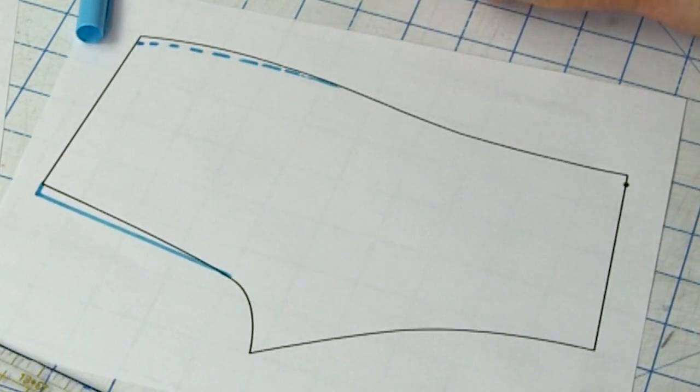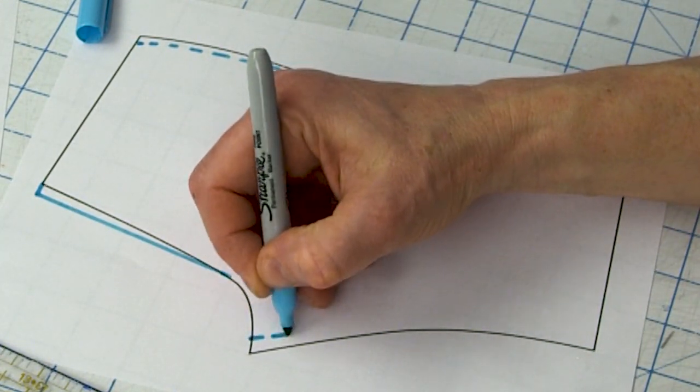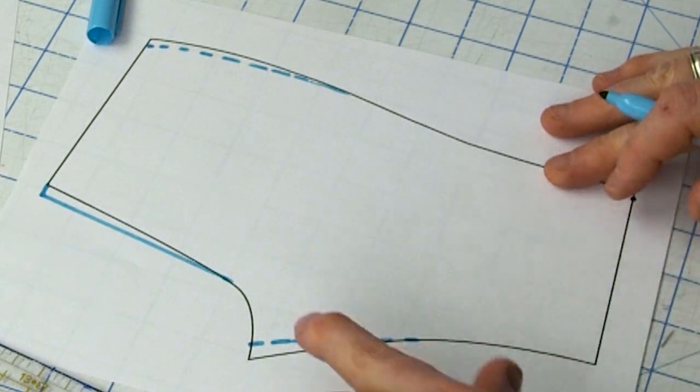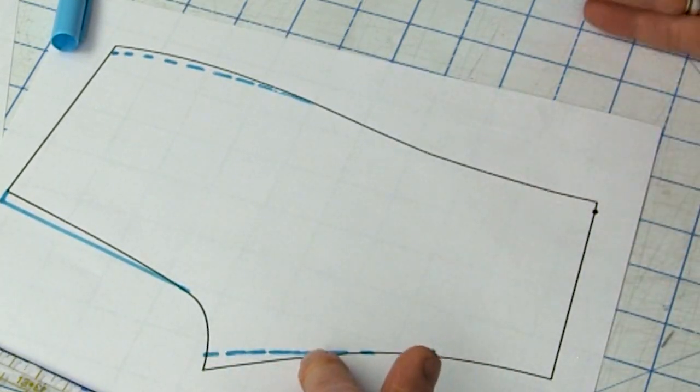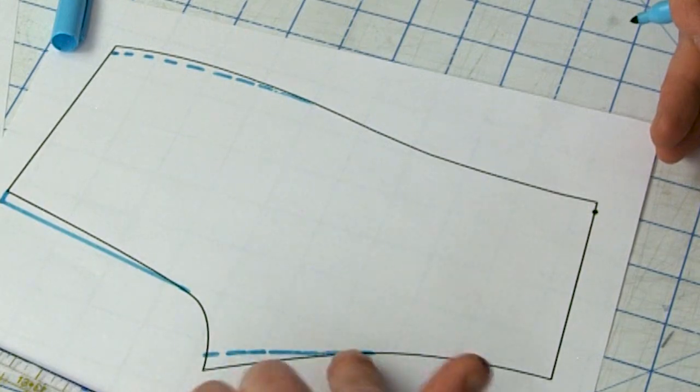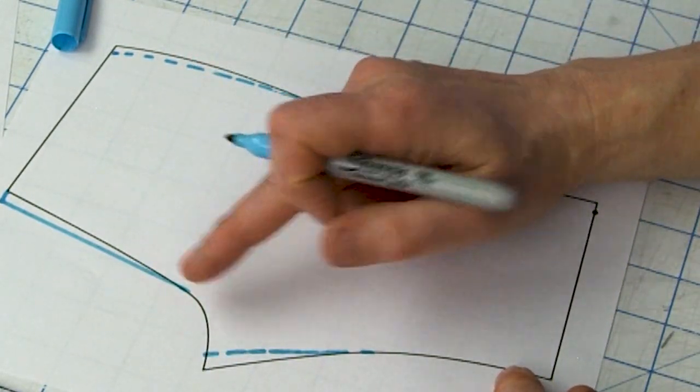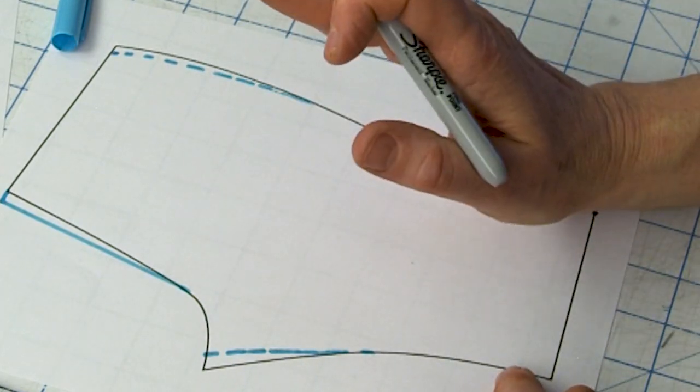And then the other thing you may need to do is trim off some of your crotch extension, because what that's going to do is reduce your horizontal space. Because if you have a flat butt, then you don't need as much front to back room. Okay, so those are the two things I would do for a flat butt.